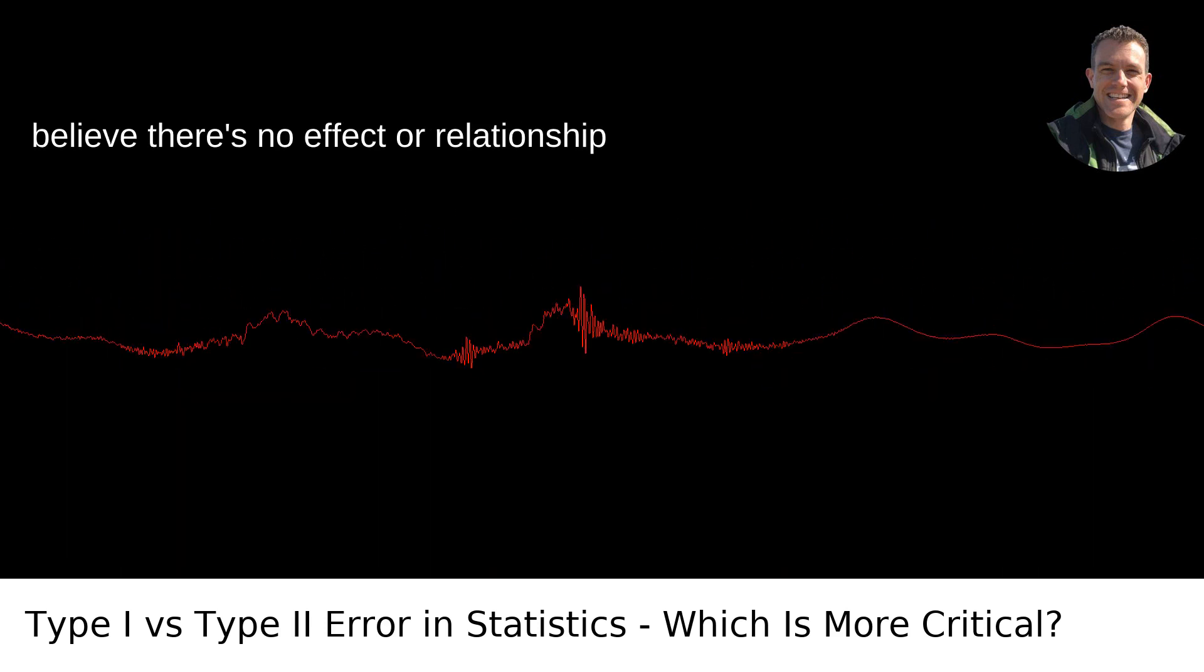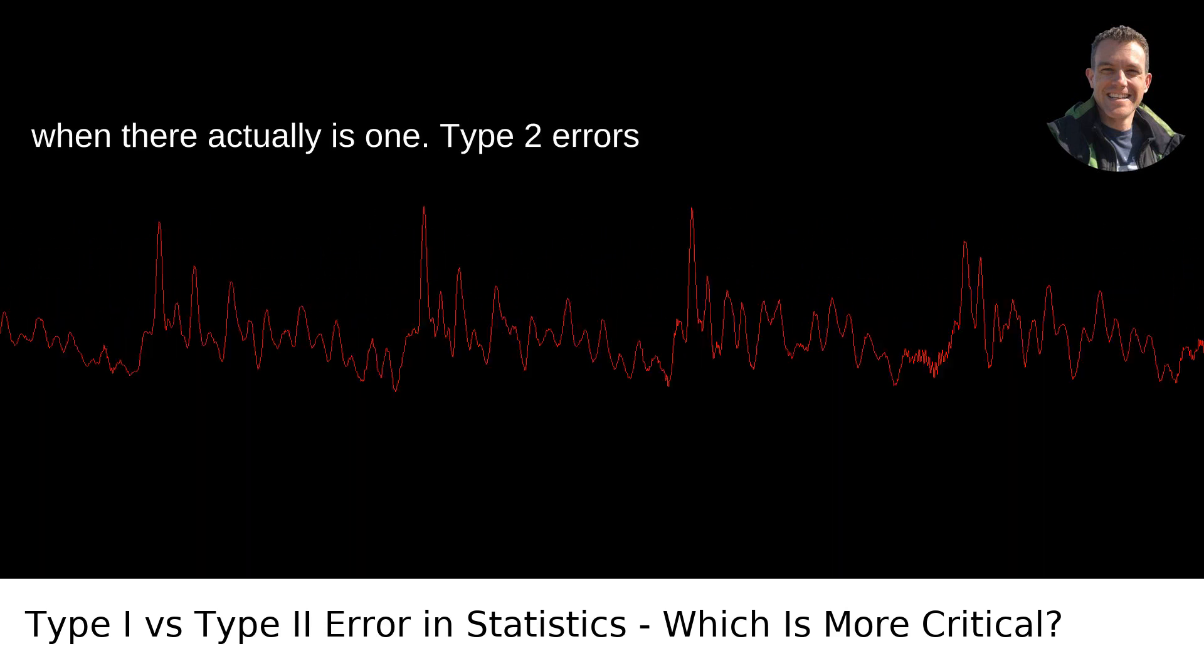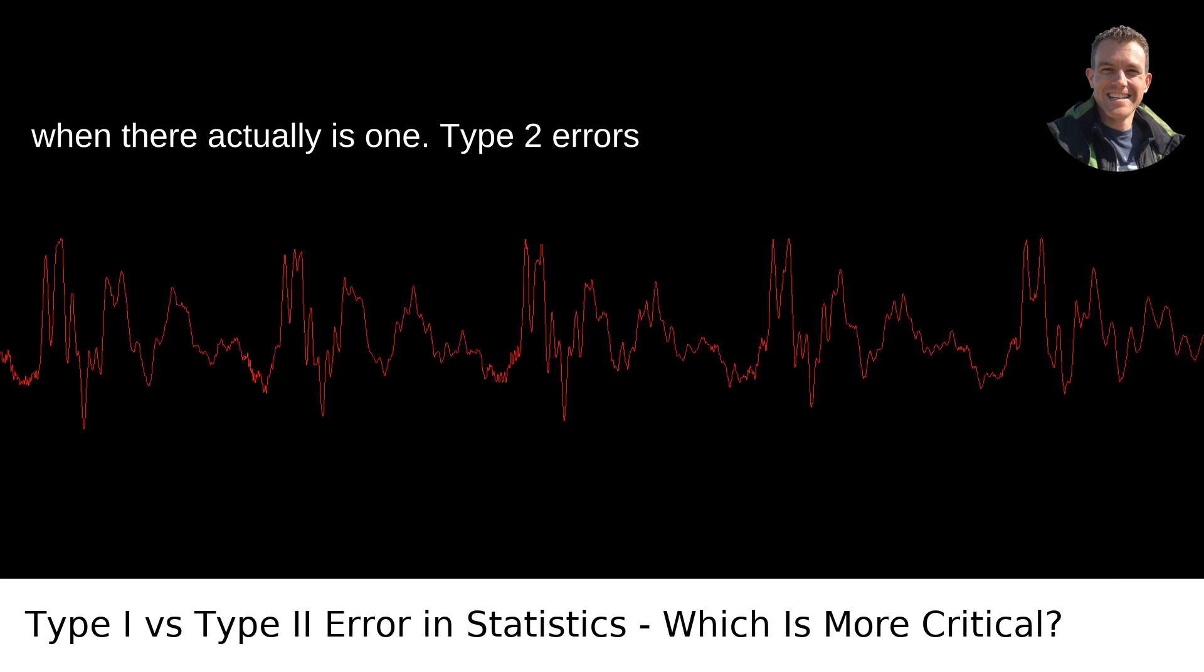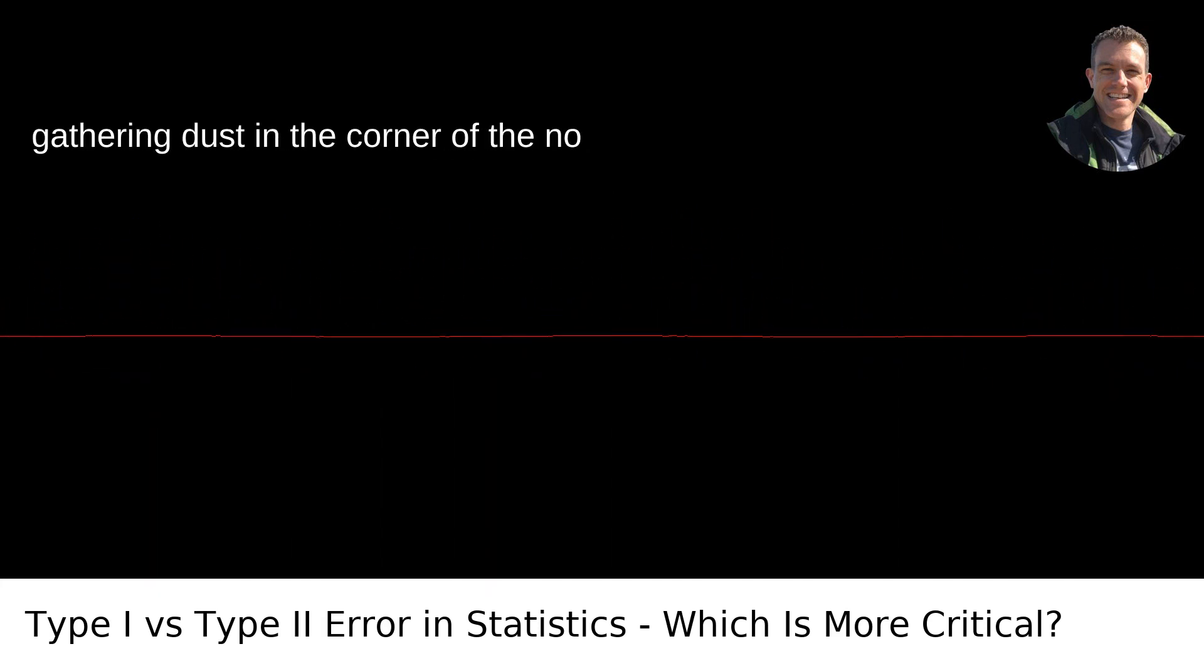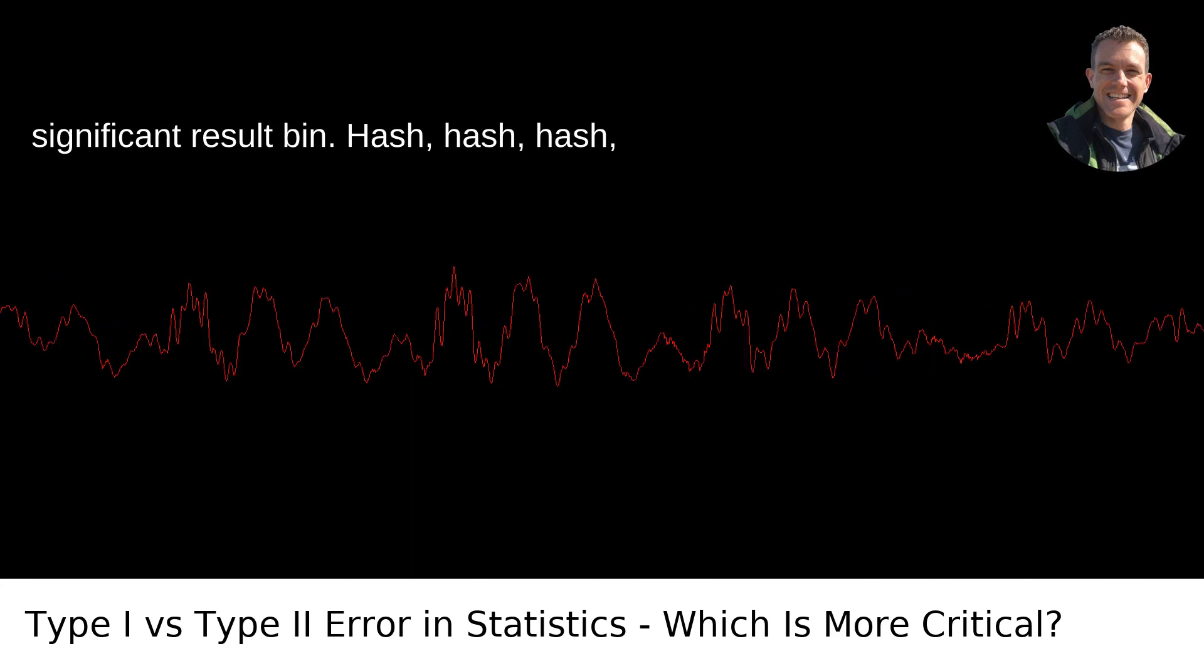This is when you mistakenly believe there's no effect or relationship when there actually is one. Type 2 errors mean a missed opportunity, a discovery that could have been groundbreaking, gathering dust in the corner of the no-significant-result bin.